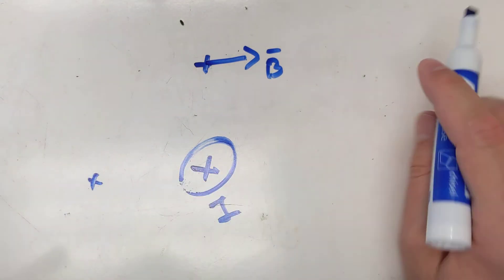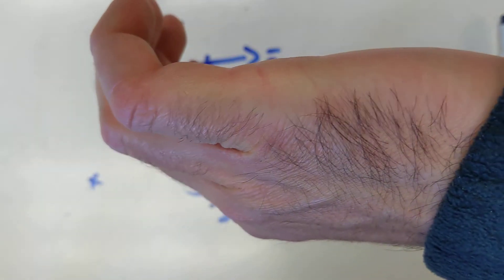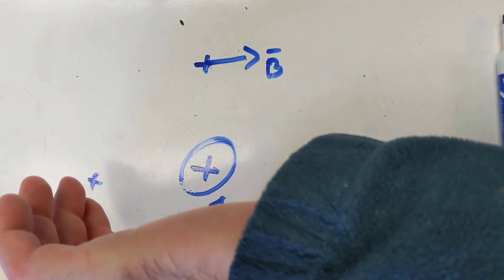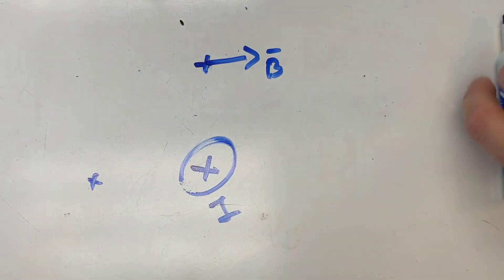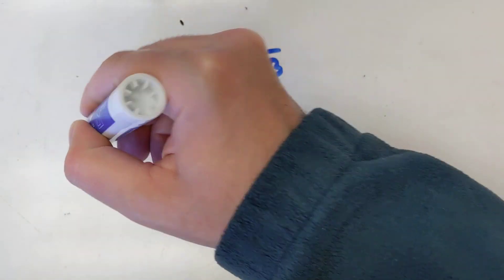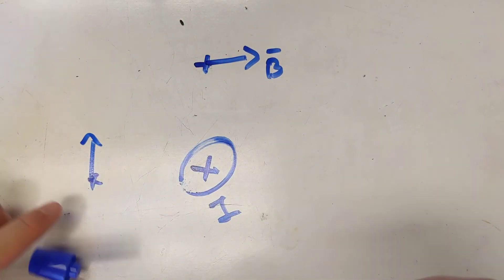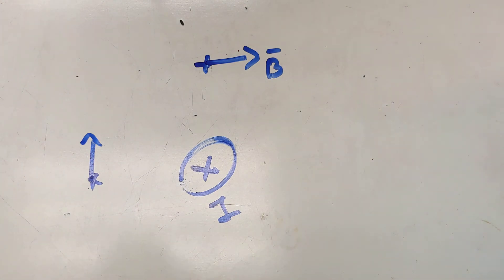If I want to find the magnetic field here, my thumb goes in the direction of the current and my fingers now point this way. I do strongly recommend that you practice with this right-hand rule.